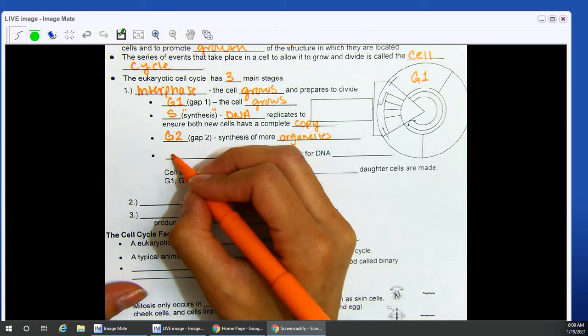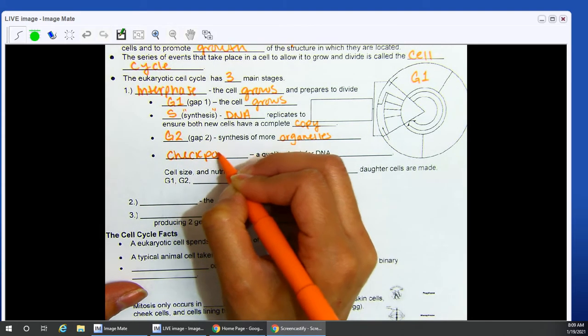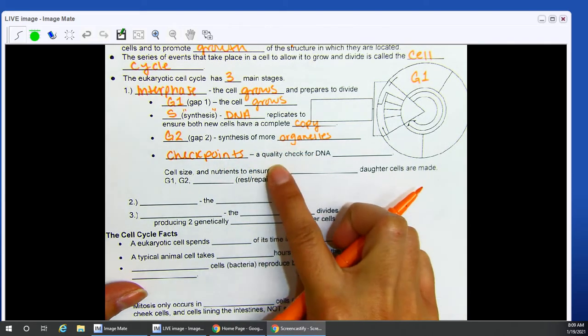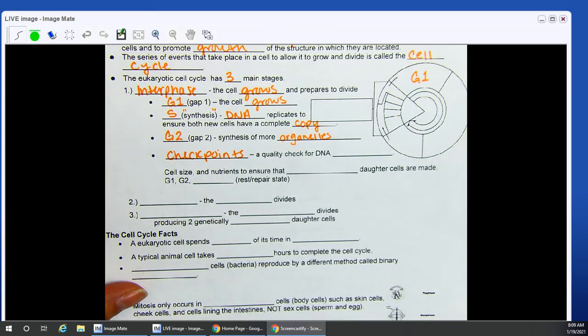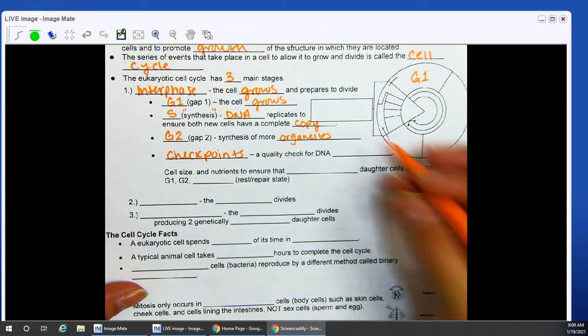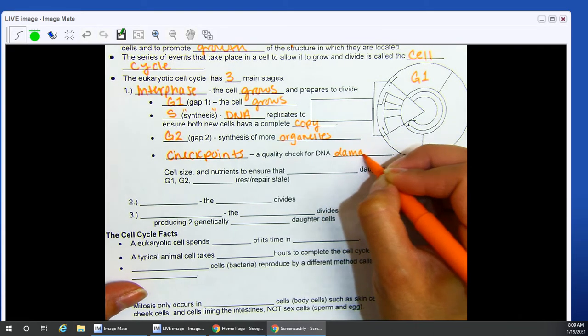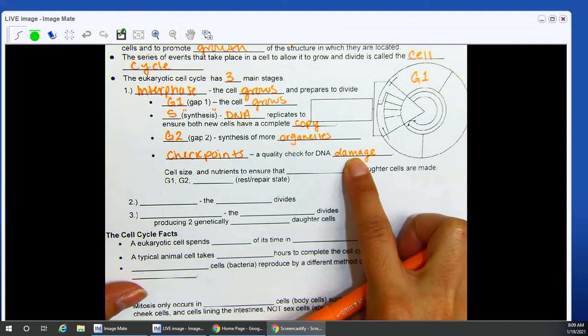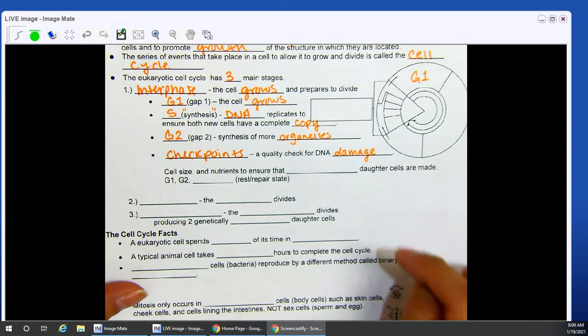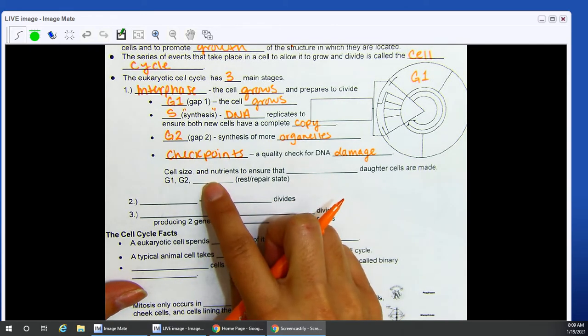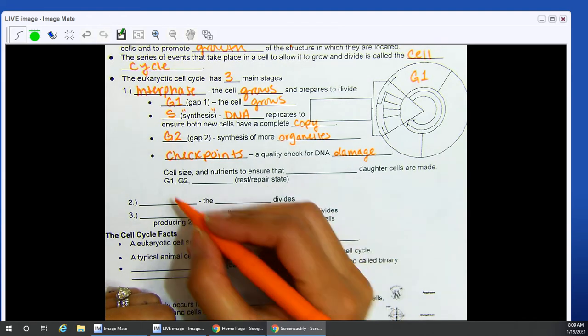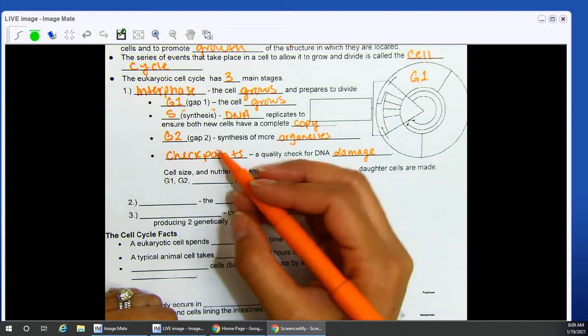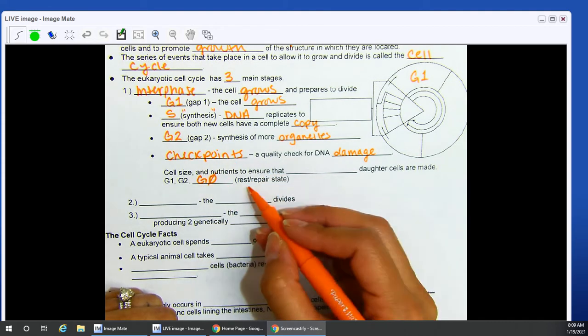Remember that organelles are your little organs. Nucleus, mitochondria, your Golgi bodies. We need to make sure that your new cells have a copy of those too. To make sure that everything is in order, you have what are called checkpoints. Checkpoints, this is like a quality check for DNA damage. So you want to make sure that DNA is good, not damaged. We're going to check for DNA, cell size, nutrients. We want to ensure that healthy daughter cells are made.